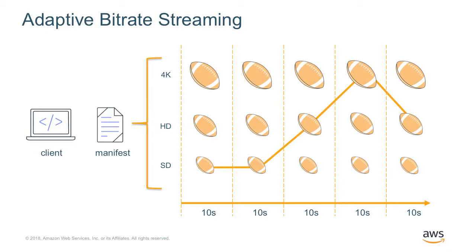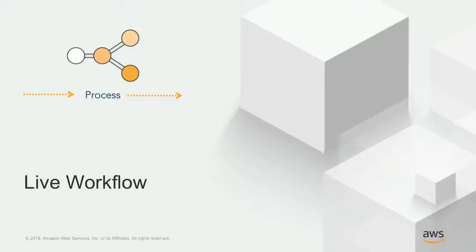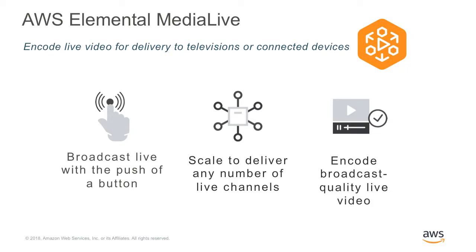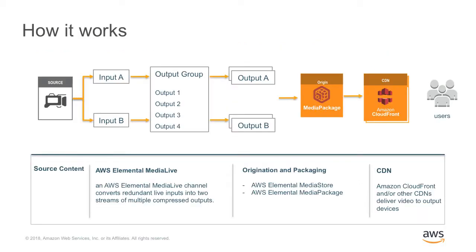Both live and VOD workflows have a common output: adaptive bitrate streaming. At your live event, you take the source and create a redundant output — that's why we have input A and B to the encoder. You create an output group and output package. The source at the venue creates outputs coming into the cloud. The cloud transcodes those into an adaptive output group, then pushes redundantly to an origin — which we call MediaPackage — and then out to CDN.